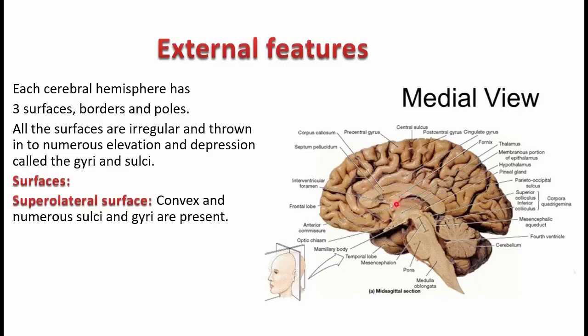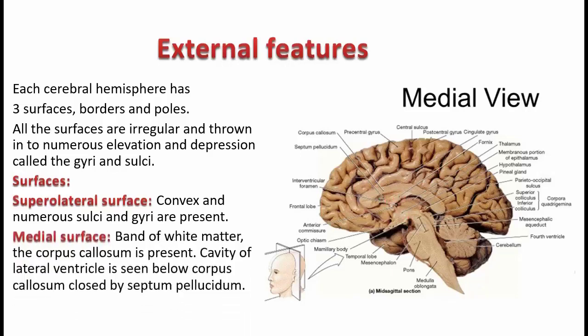The fornix is a part of the limbic system, and below that what you are able to see is the thalamus and the hypothalamus, which we have just discussed in the last lecture. So mainly on the medial surface you come across the corpus callosum, the cavity of the lateral ventricle covered by the septum pellucidum.